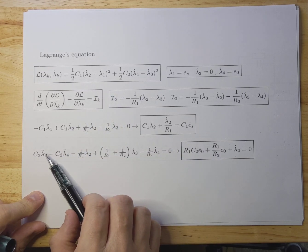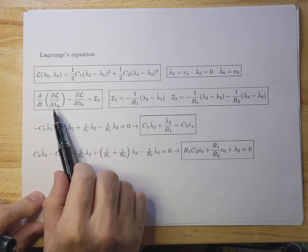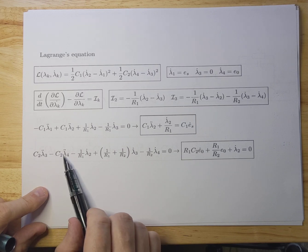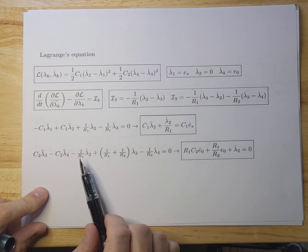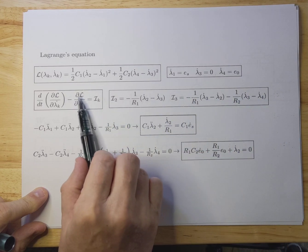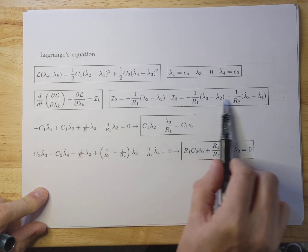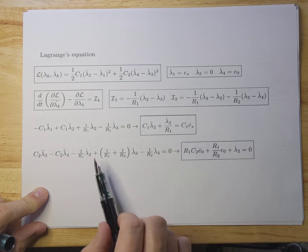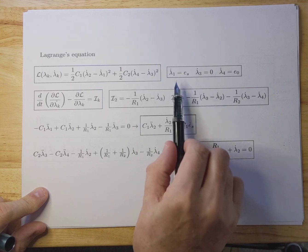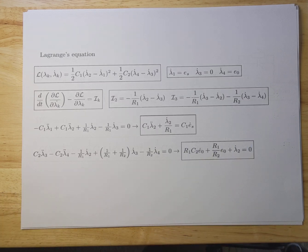For the second equation, we differentiate the Lagrangian with respect to lambda 3 dot, yielding two terms. There is again no dependency on lambda 3 in the Lagrangian, so that term is zero. Inserting I3 on the other side and simplifying using the same rules gives the second equation of motion.